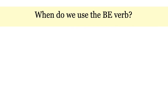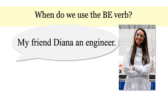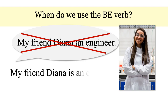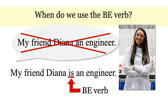If you say to me, my friend Diana an engineer, I understand more or less what you're saying, but the grammar is incorrect. We need the BE verb to connect the subject to the noun engineer. My friend Diana is an engineer. We need the BE verb for the sentence to be correct.